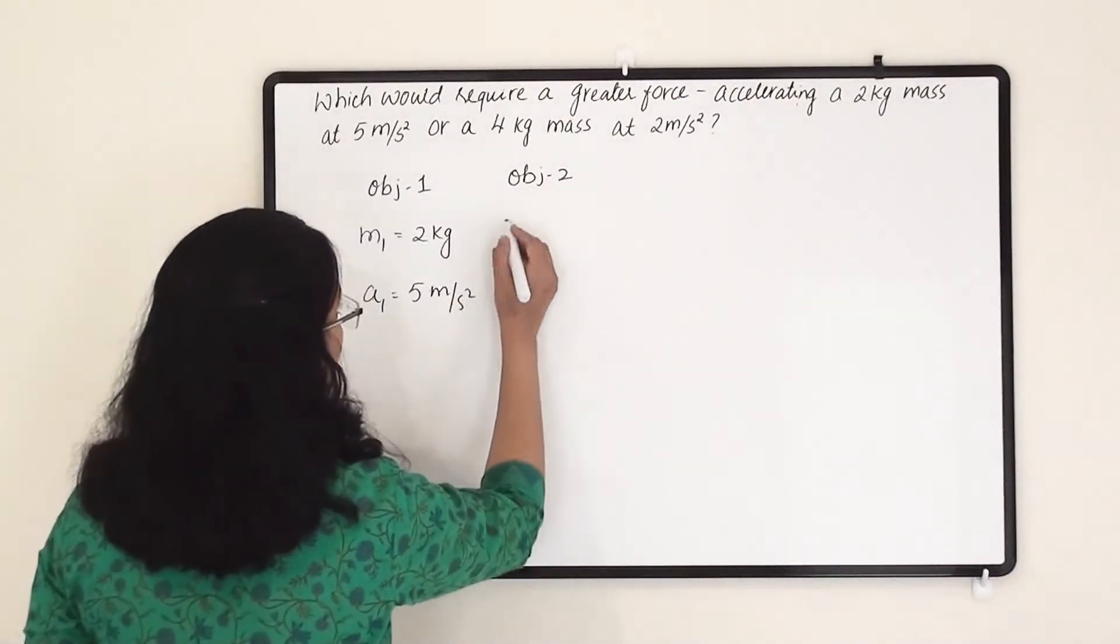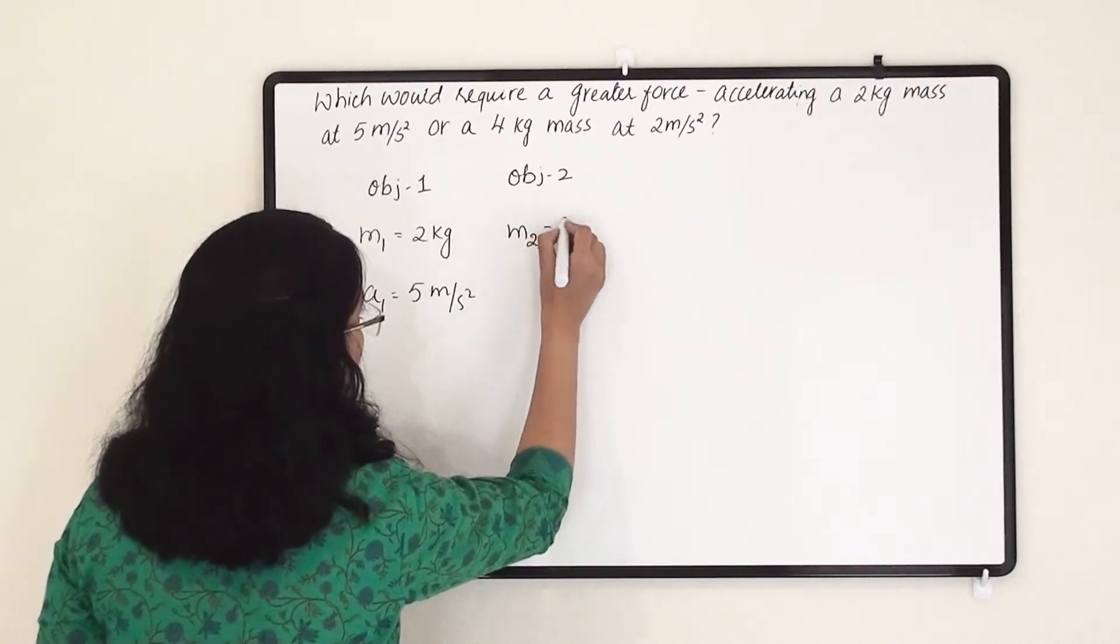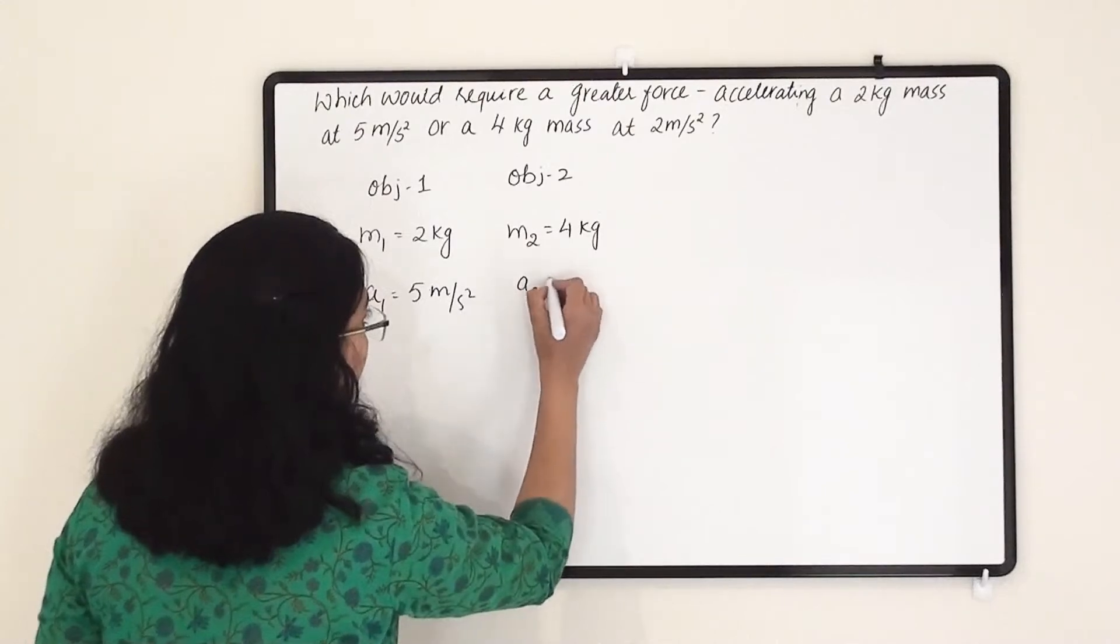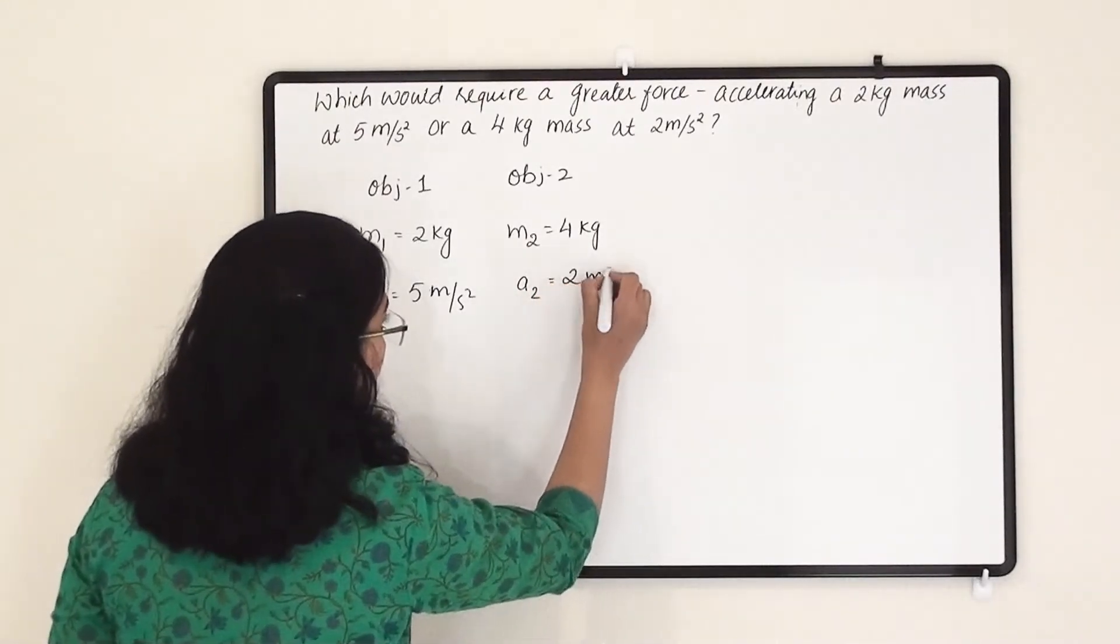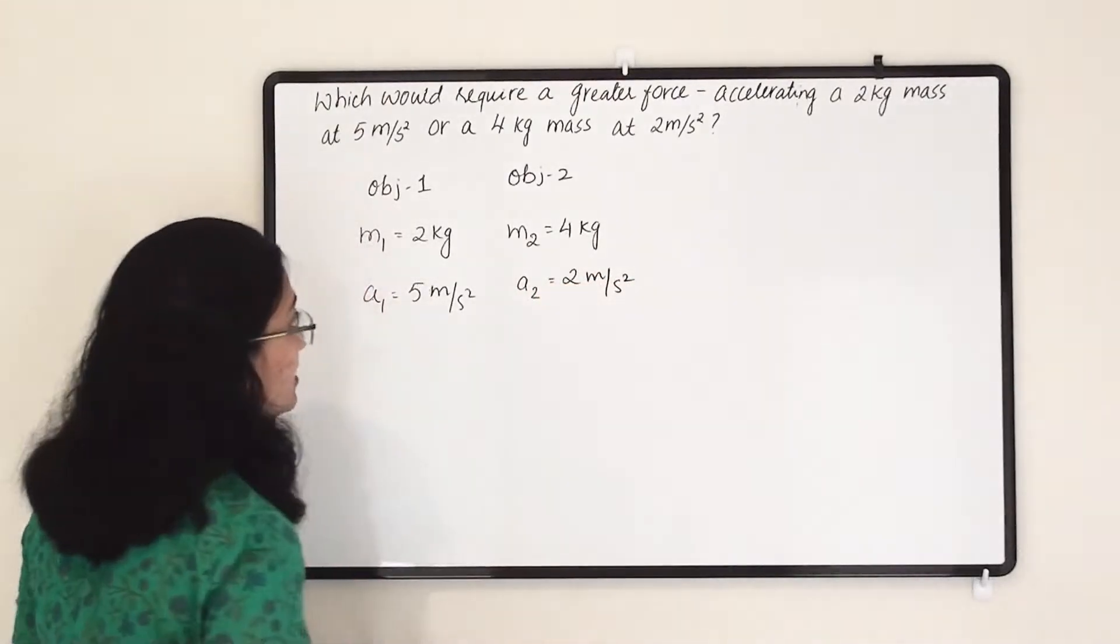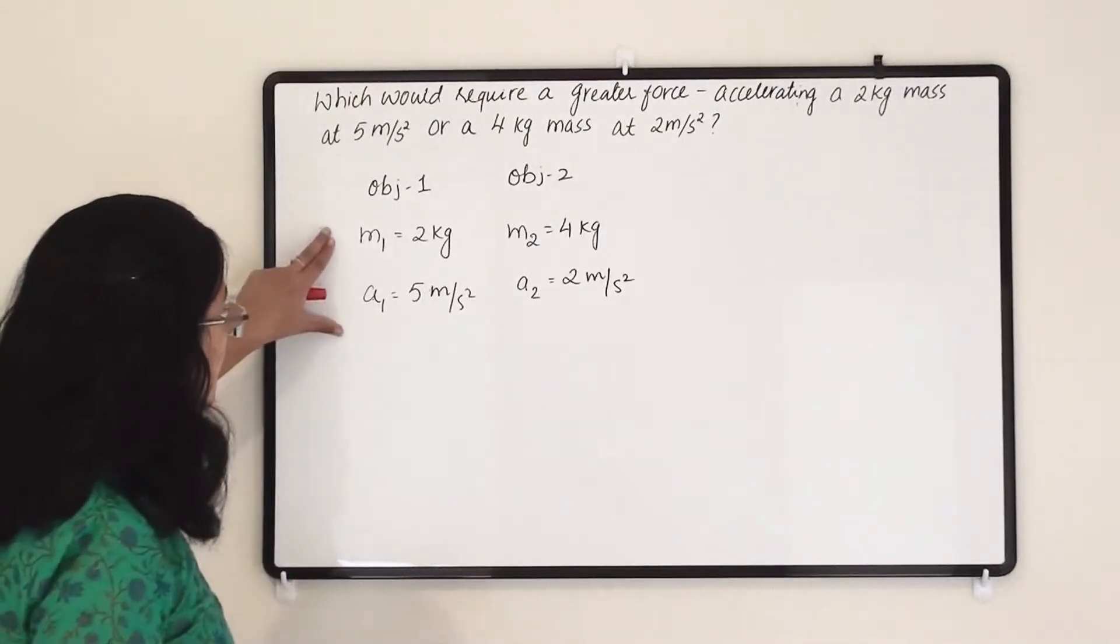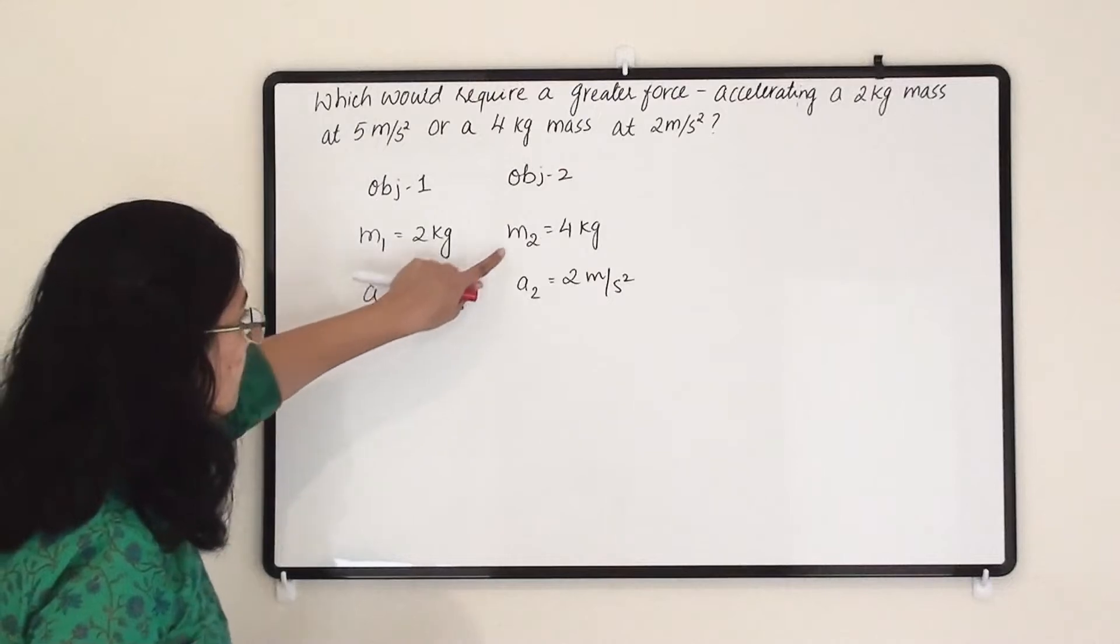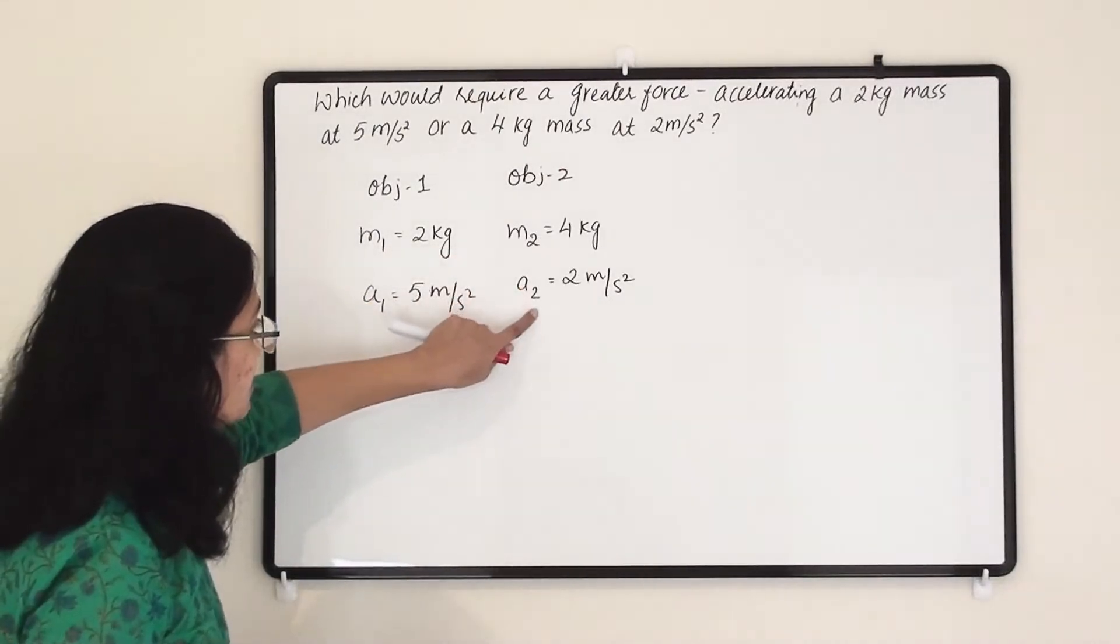Now for object 2, m2 is 4 kg mass and the acceleration which we require for this object is 2 meter per second square. So this is the situation that for this mass we require this much acceleration, for this mass we require this much acceleration.